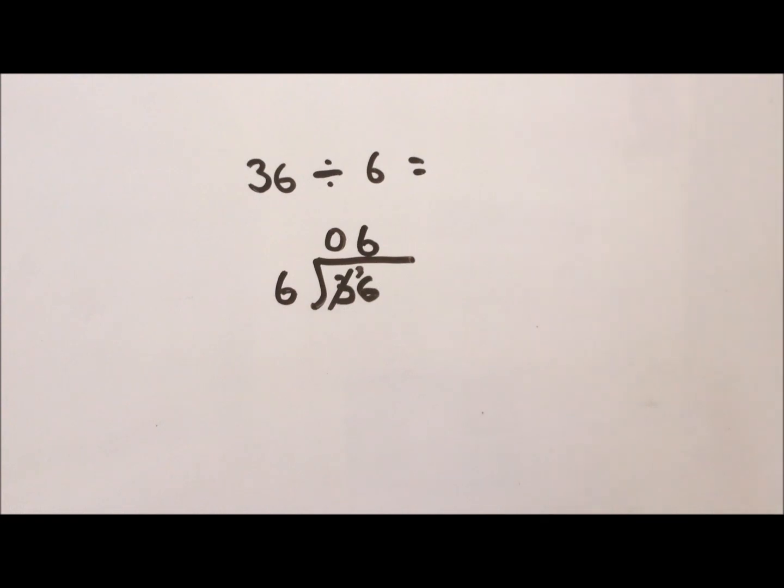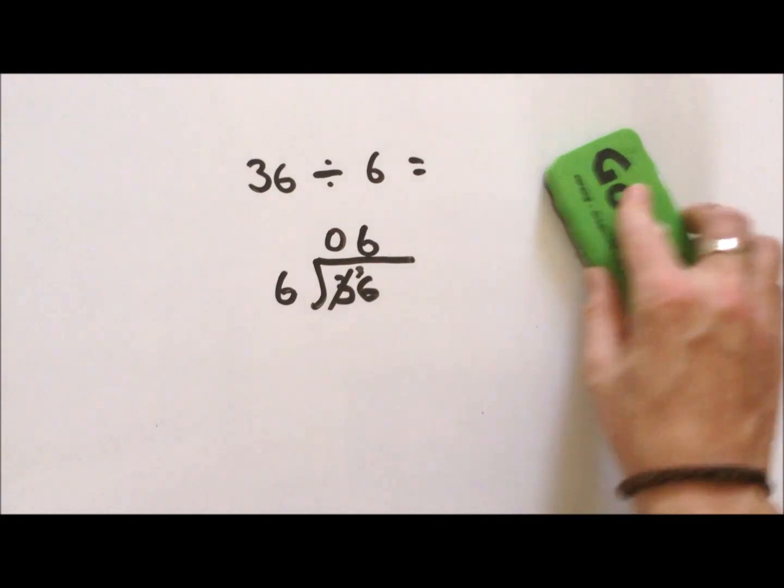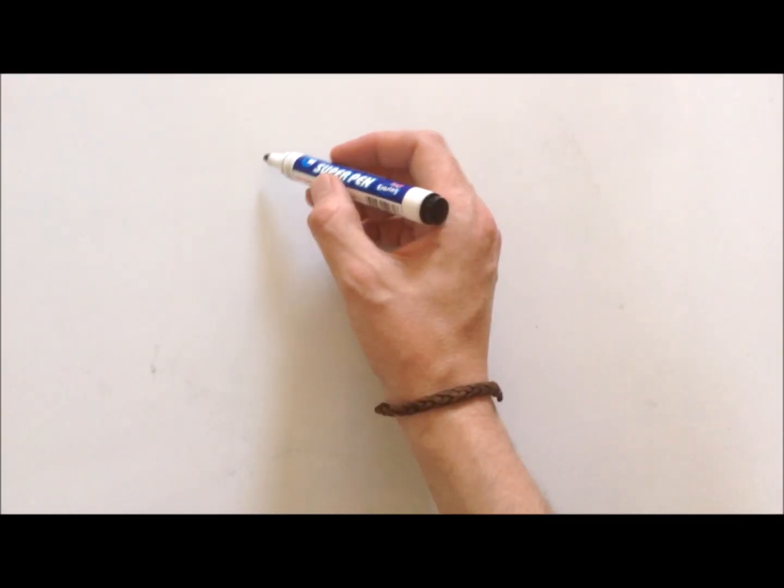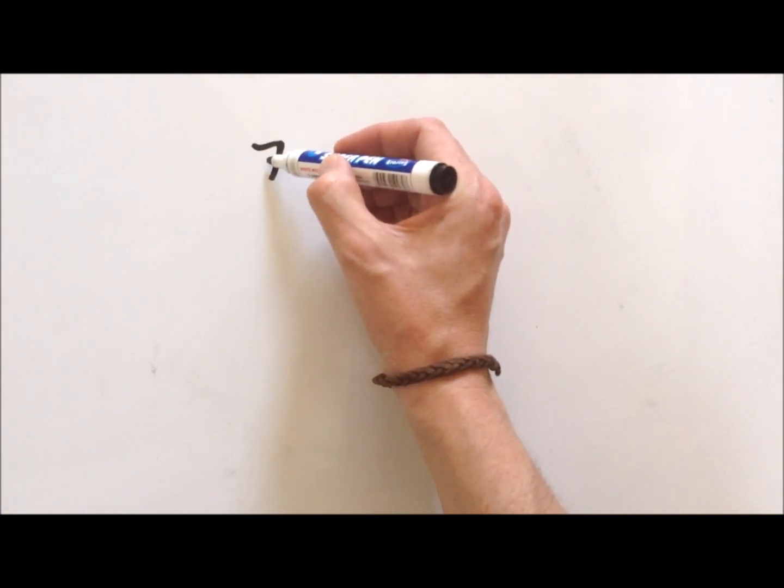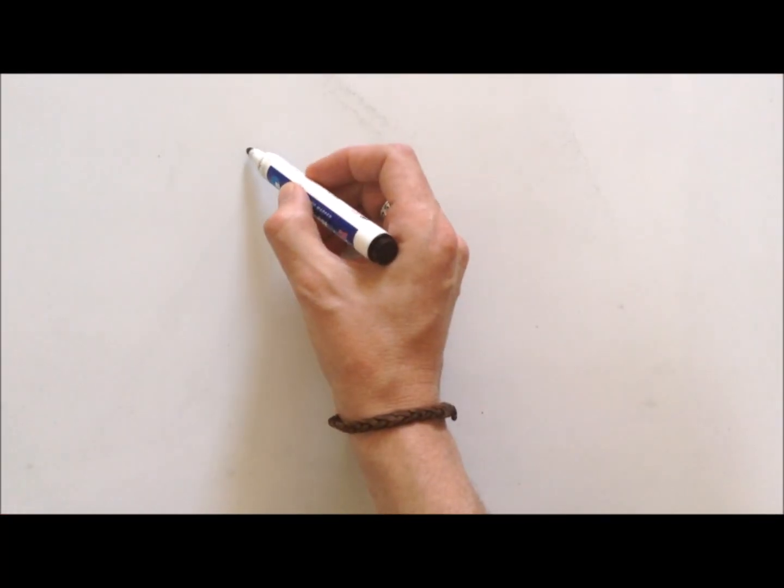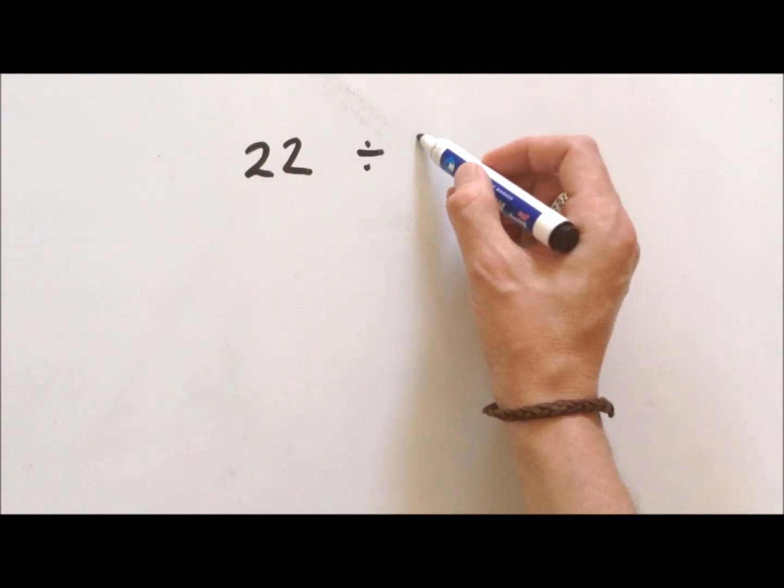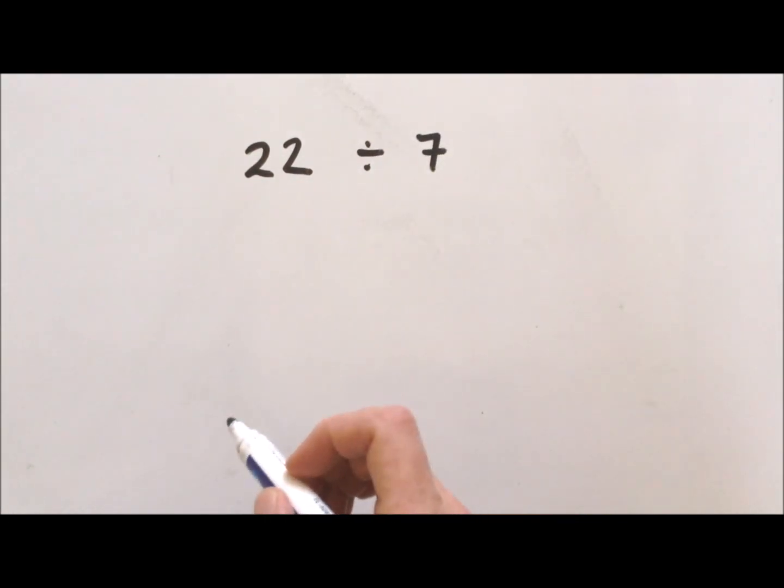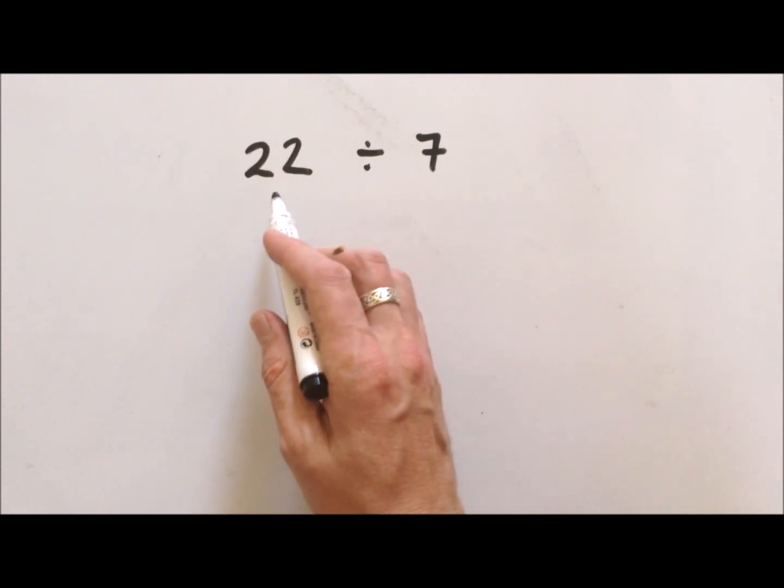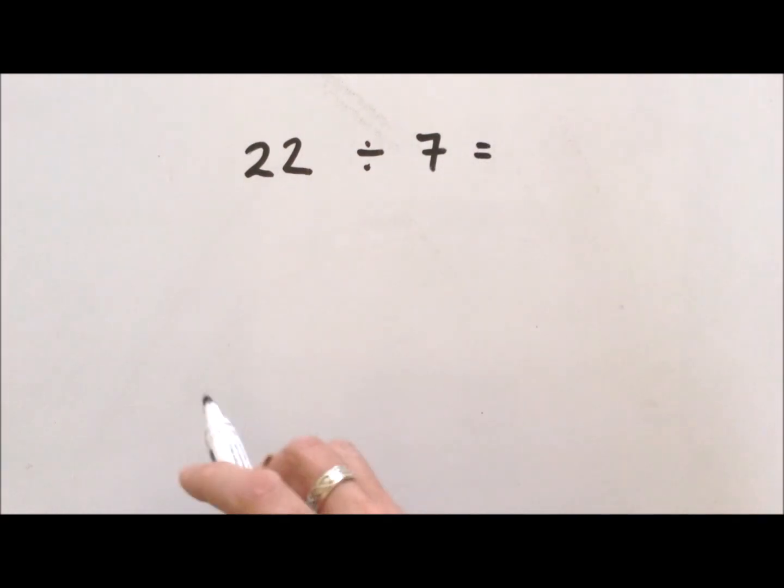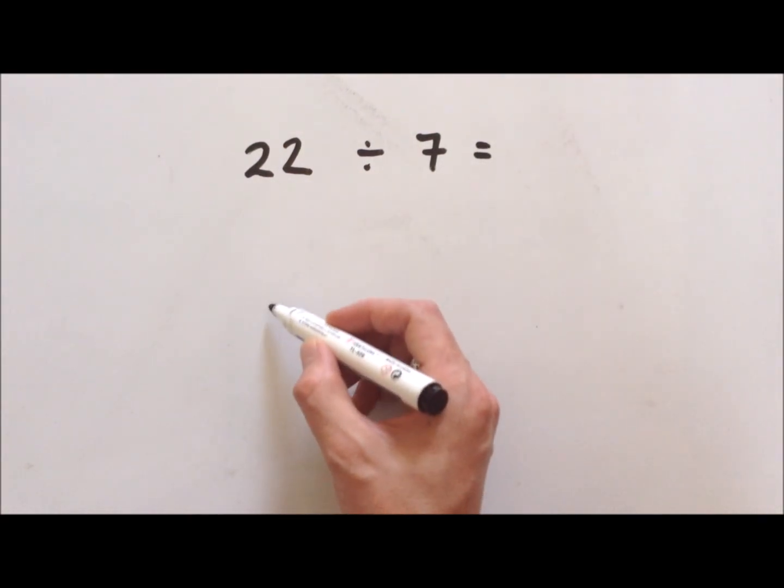So that's a quick run-through of bus stop division with whole numbers. Let's do this again with another problem: 22 divided by 7. It doesn't look like 7 will go in there completely because if we know our times tables, so let's put this in bus stop division format.